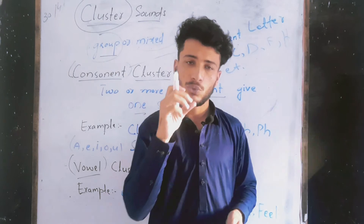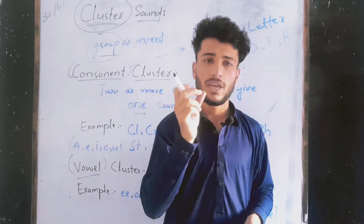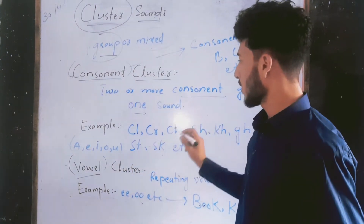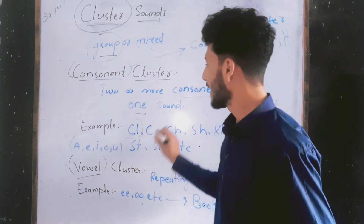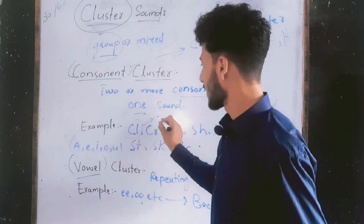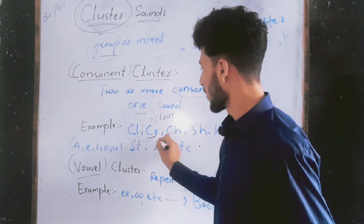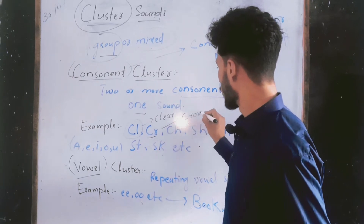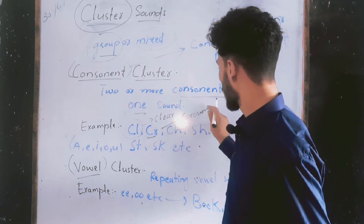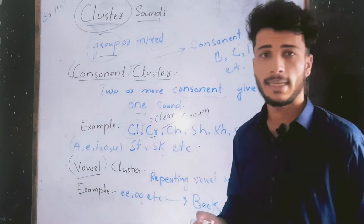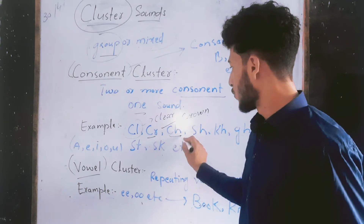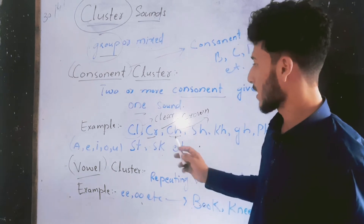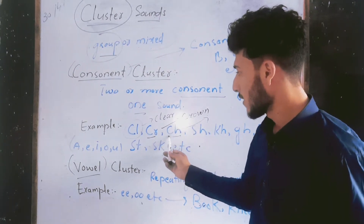For example, 'cl' — like in 'clear.' Another example is 'cr' — like in 'crown.' And 'ch' — like in 'China' — the 'ch' gives us the sound of 'cha.' So this is also a consonant cluster.